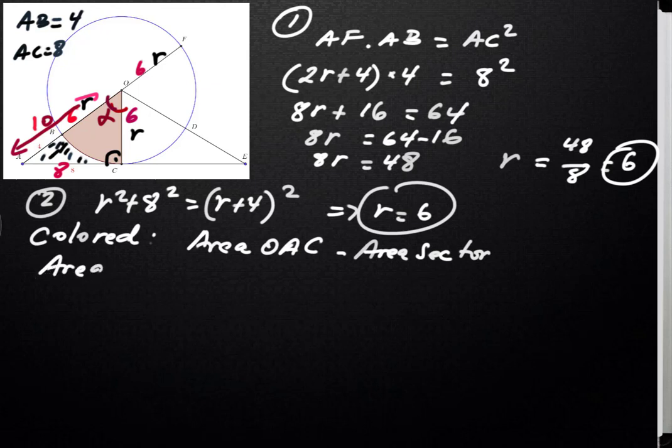So let's go ahead and calculate these two values. So for the triangle, right triangle OAC, we can say we can take r as the height and then the base is 8. So you can say one-half of 6 times 8 is equal to 24 units squared. So that is the area of our triangle OAC. Now we have to find the area of our sector.